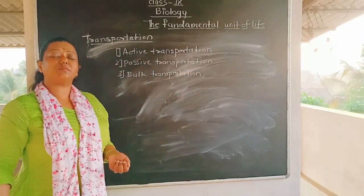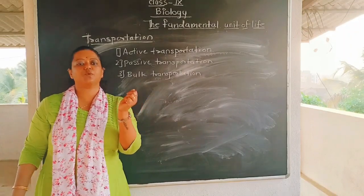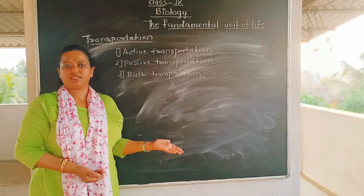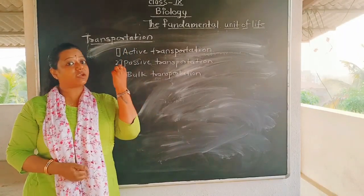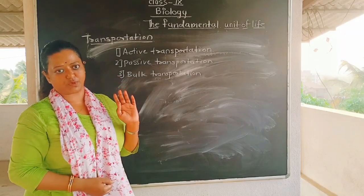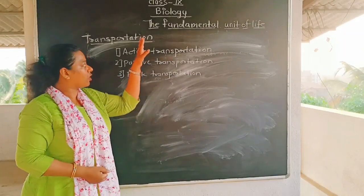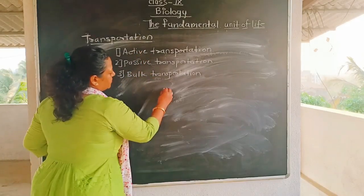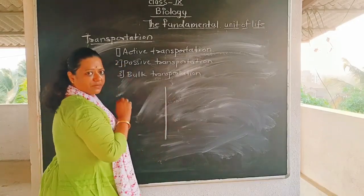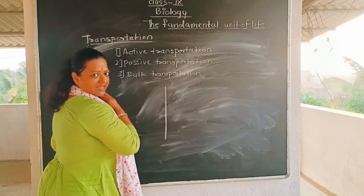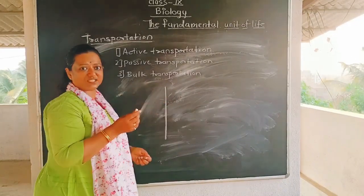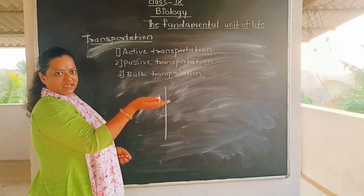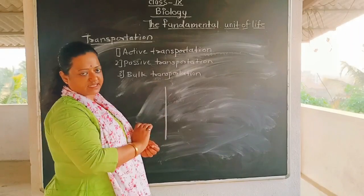It may not be included in your textbook, but if you watch this video lecture carefully, you will be able to understand every line of your textbook. I am going to talk about active, passive, and bulk transportation in detail. Suppose if you talk about this cell membrane — this is the cell membrane — and inside the cell, actually the cell has two parts: inside and outside.